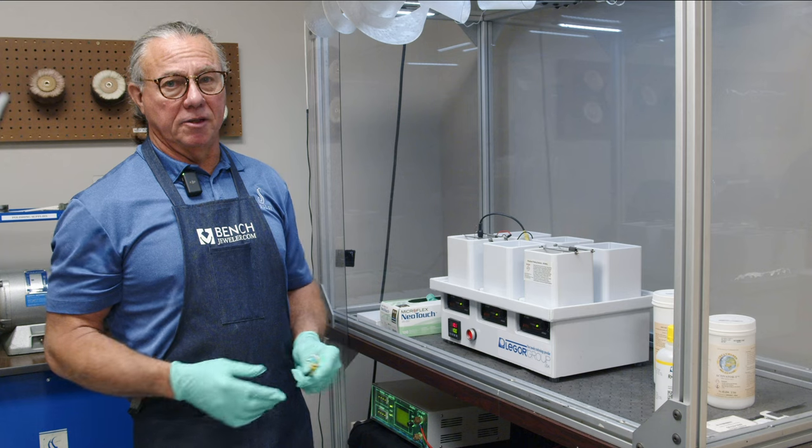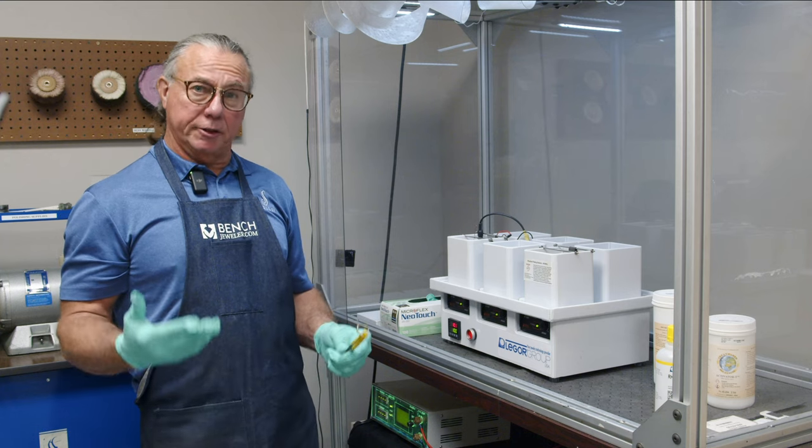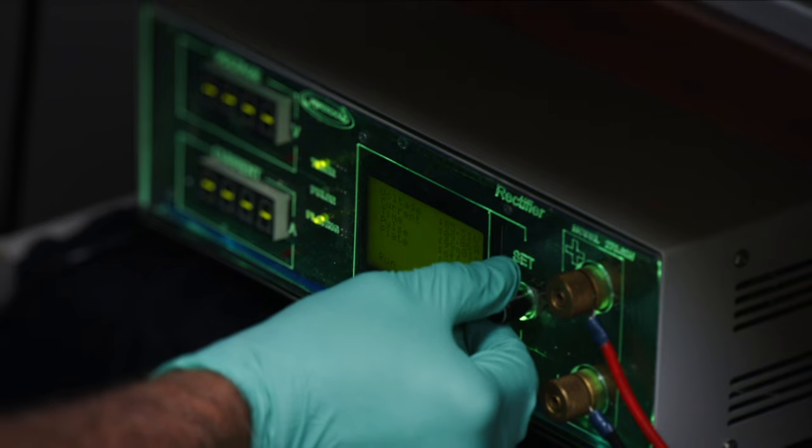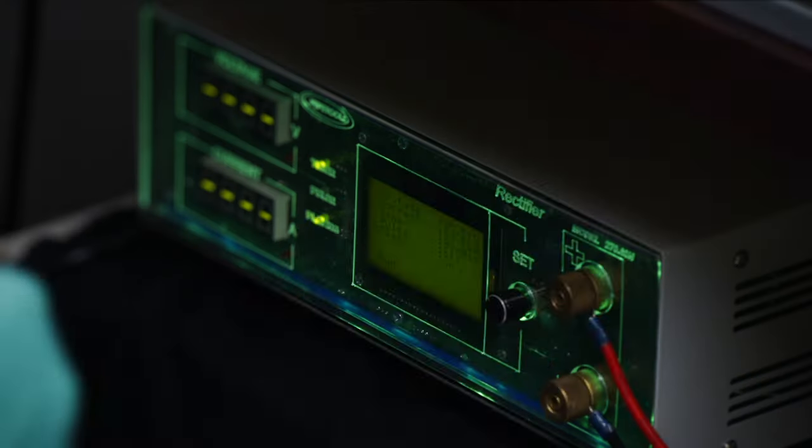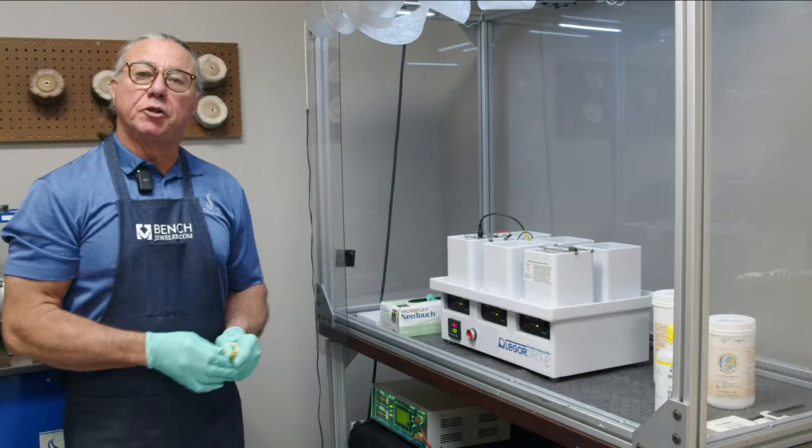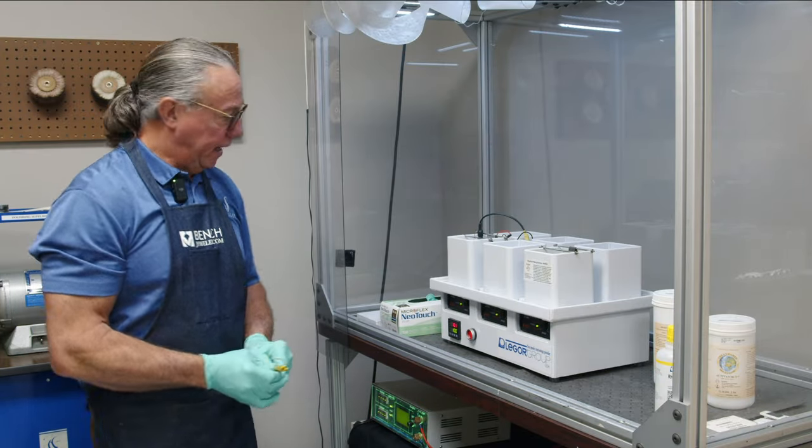The first part of this is going to be doing the ElectroClean. So I'm going to adjust the current on my rectifier to five volts. Now we're ready to go. I'm going to turn my rectifier on to ensure that I go into the bath with electrical current already on.